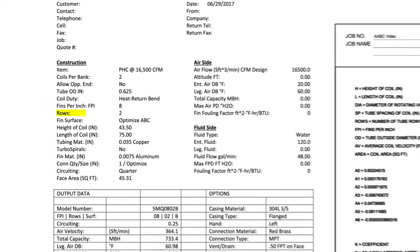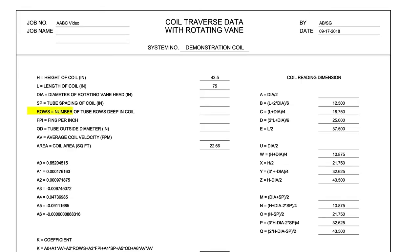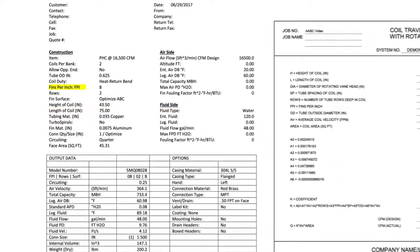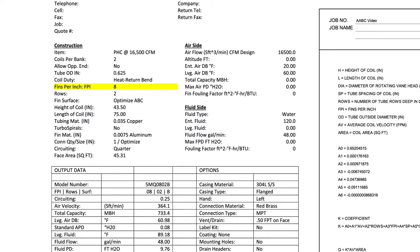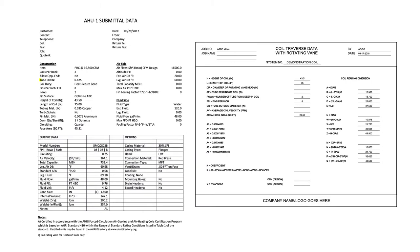From the submittal data, record the number of tube rows deep in the coil: rows equals number of tube rows deep in the coil as two. From the submittal data, record the number of fins per inch: FPI equals fins per inch as eight. From the submittal data, record the coil's tube outside diameter: OD equals tube outside diameter as 0.625.